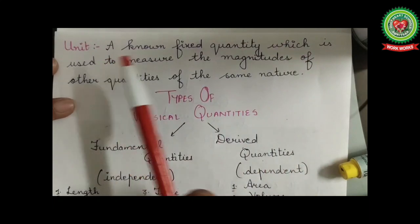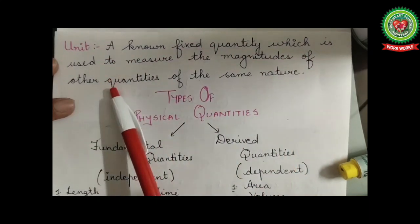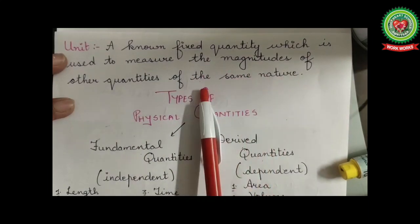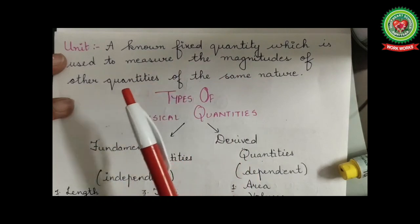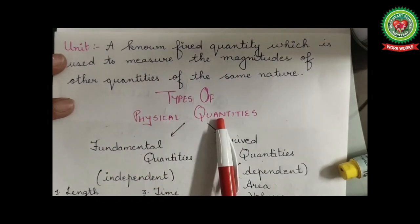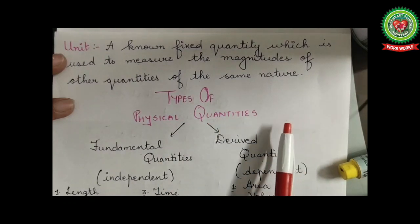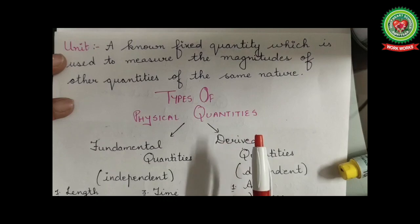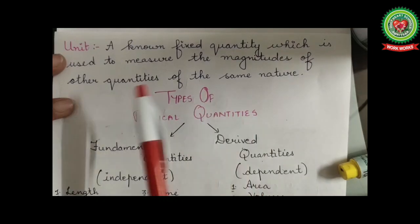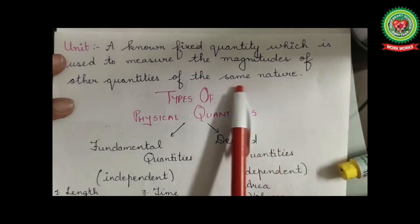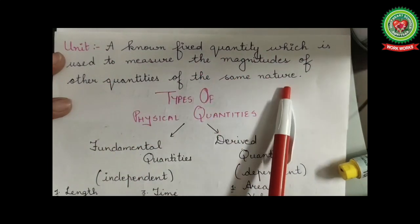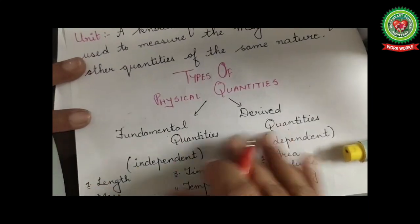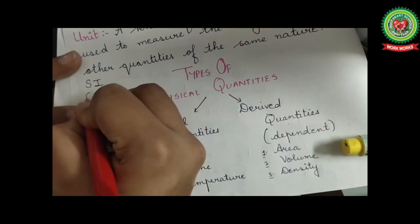Next, what is a unit? A unit is a known fixed quantity used to measure the magnitudes of other quantities of the same nature. Same nature means if I am going to measure the length of a substance, I'll use the unit of length only — that can be meter, centimeter, kilometer — not liters, grams, or seconds. It should be the unit of length only.